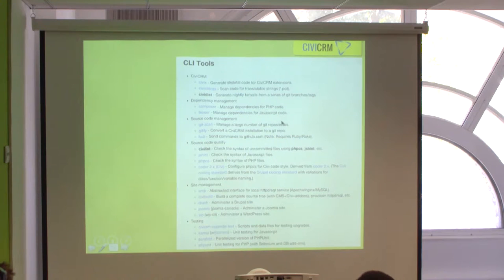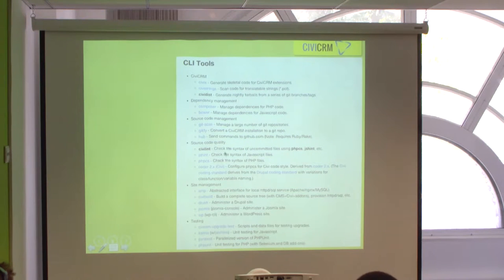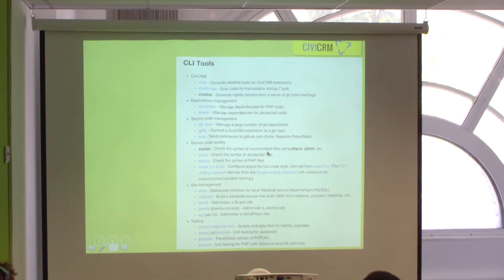Once you get Build Kit installed, here are a few services available. You can generate sample code using a utility called Civics. There is CiviScan, another utility. You can run CiviLint, which checks for code formatting and CiviCRM coding standards — always good to run before submitting a patch so you don't get syntax or formatting errors. There is also Karma for testing JavaScript.